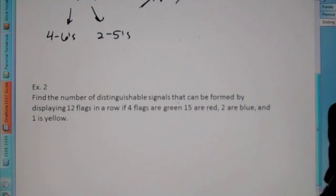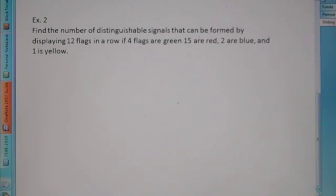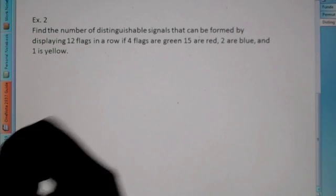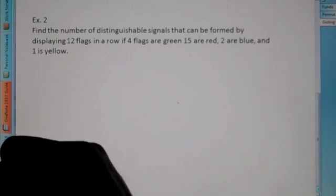Let's go to the next one. Find the number of distinguishable signals that can be formed by displaying twelve flags in a row. Four flags are green, five are red,